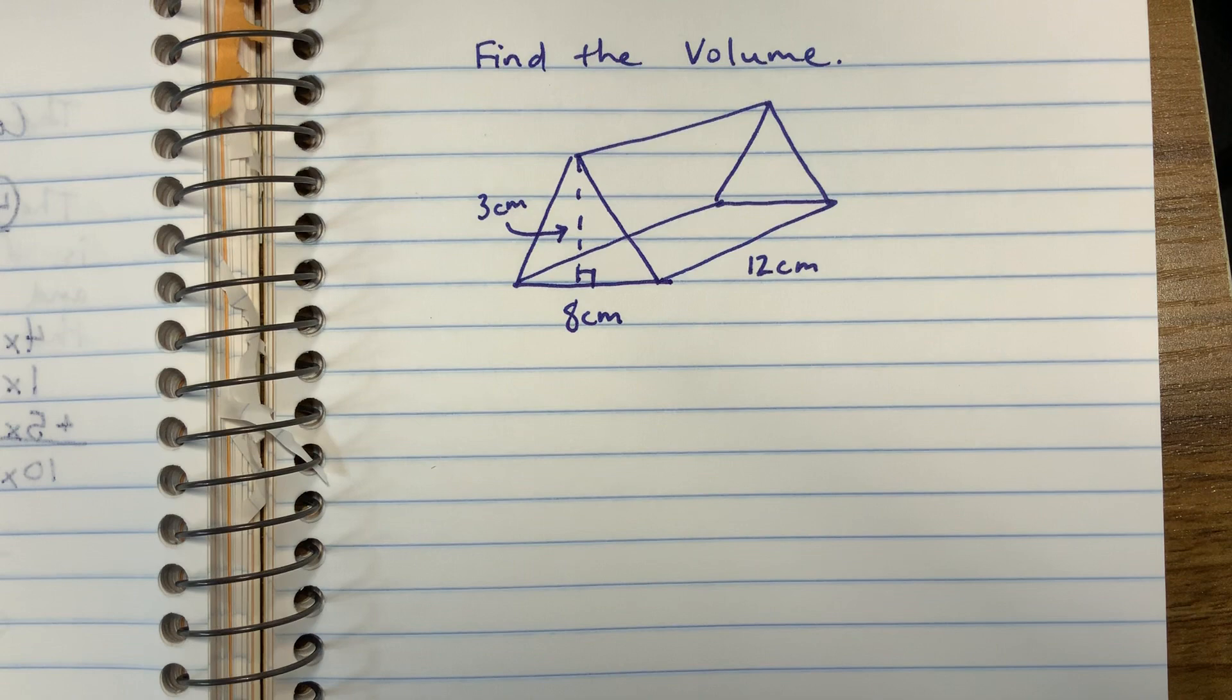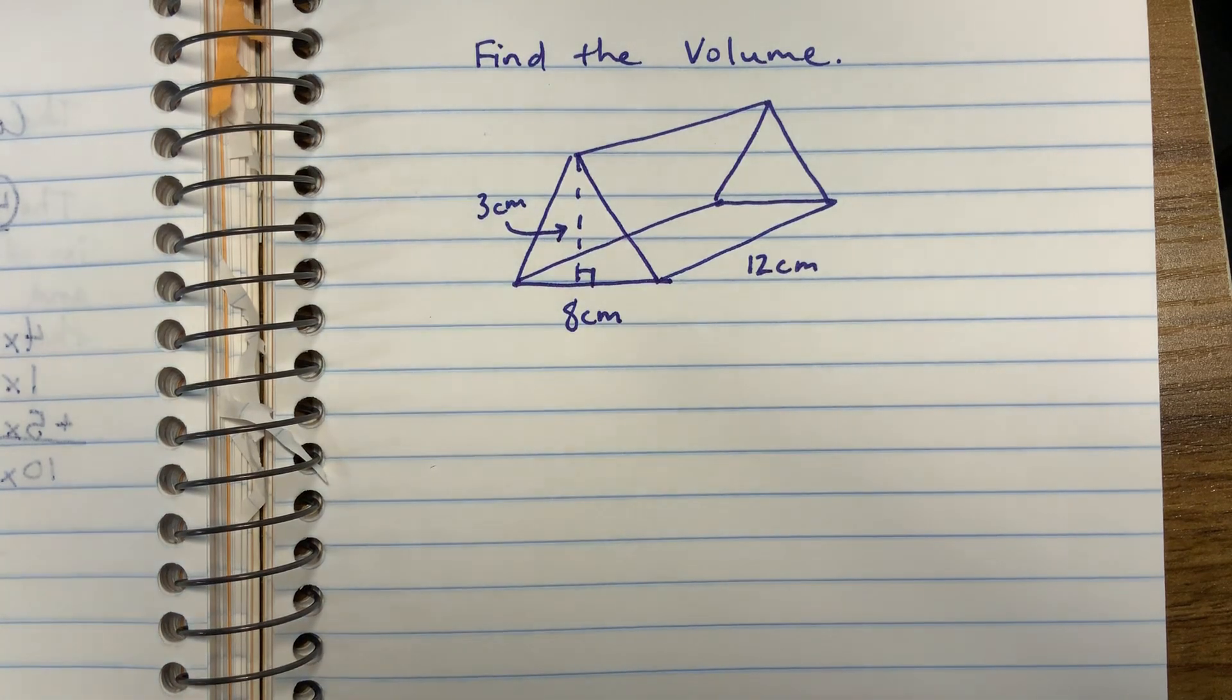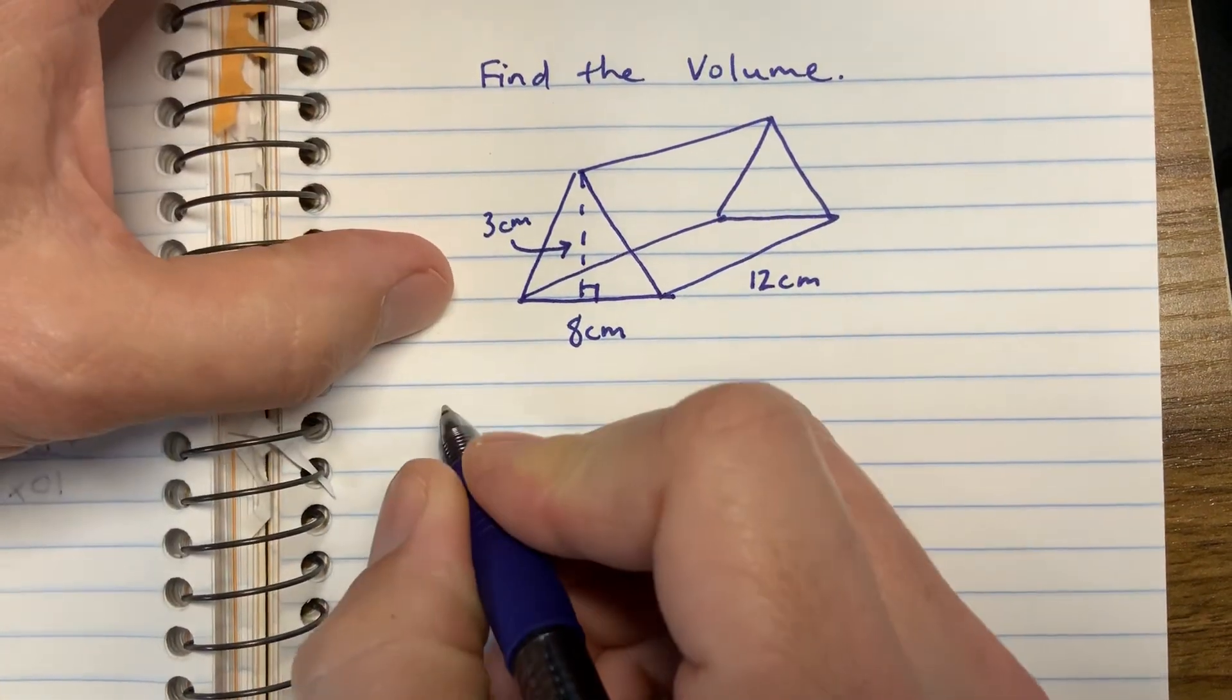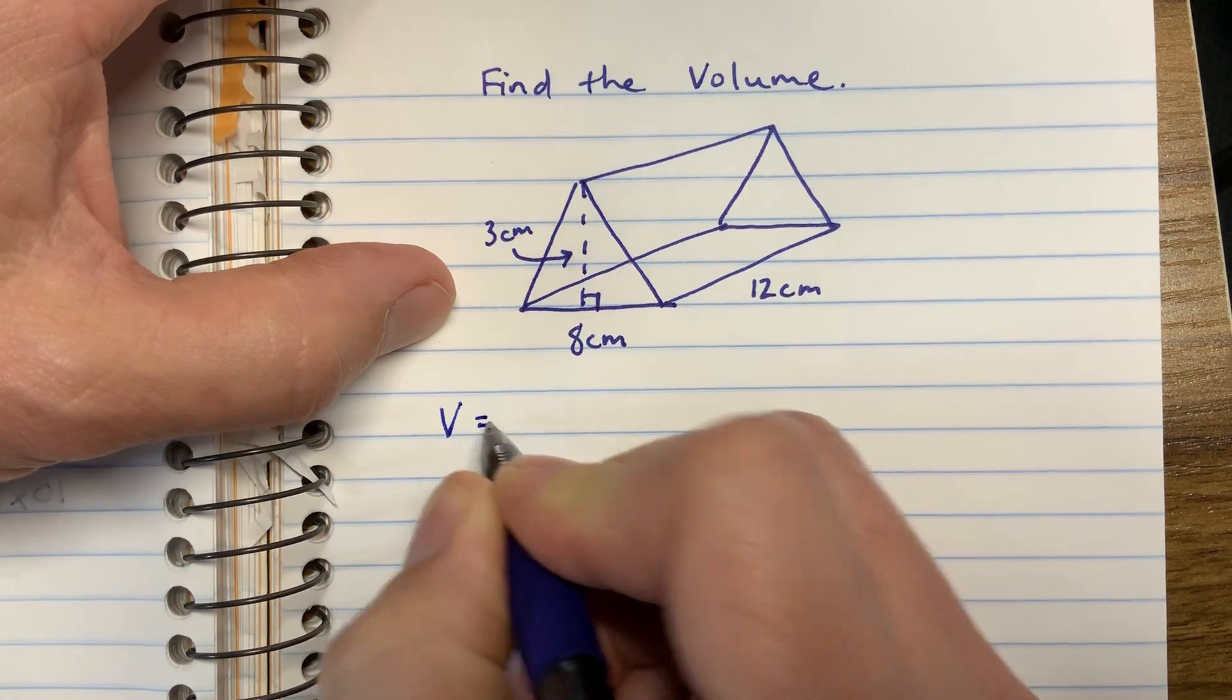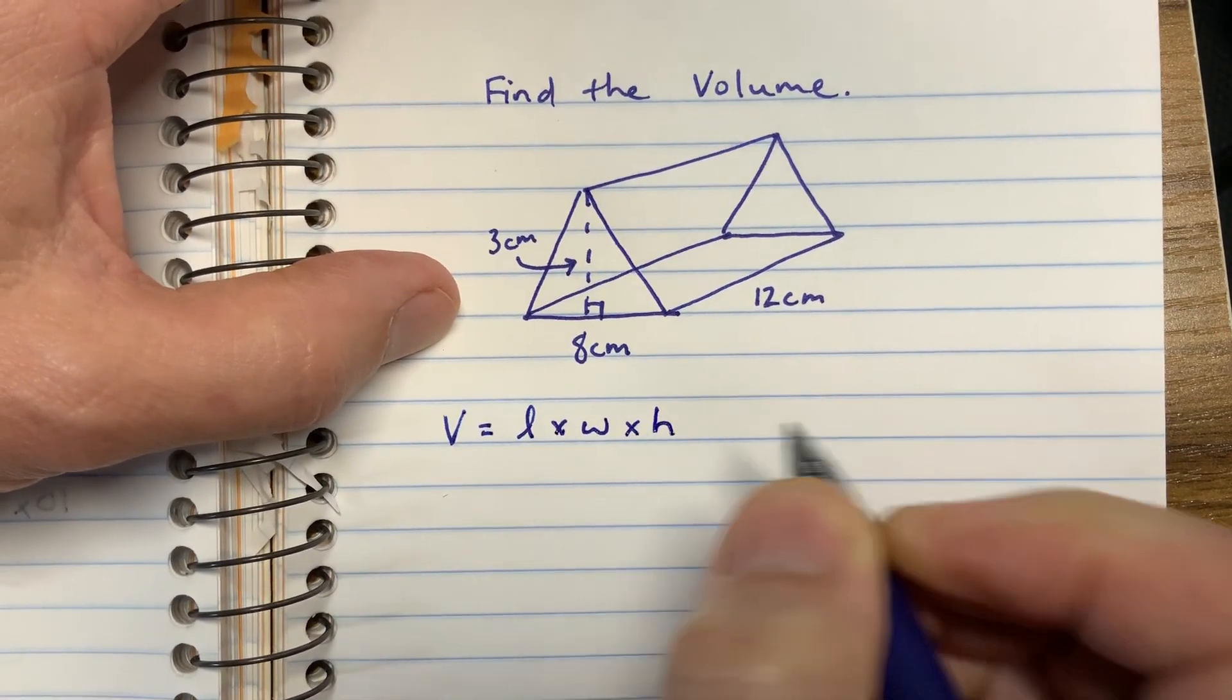Remember, triangles are just half of a rectangle. So we're going to do the same thing with this triangular prism as we would do with a rectangular prism, and then find half. So with a rectangular prism, the volume is equal to length times width times height.